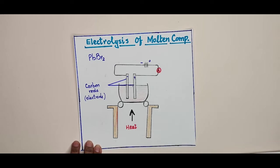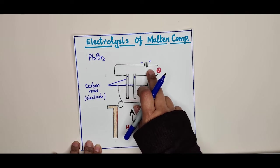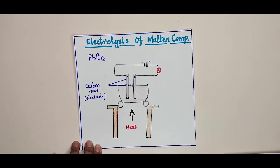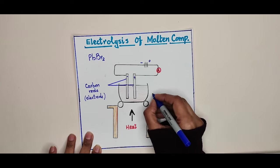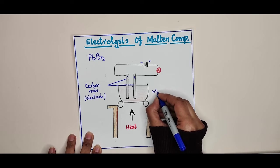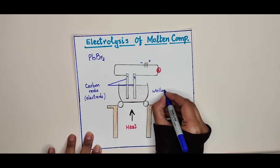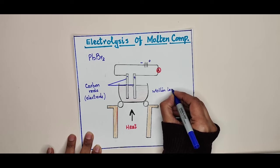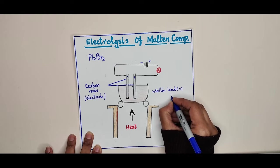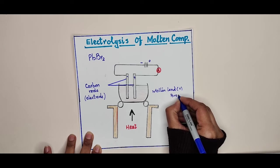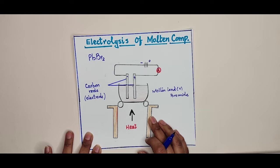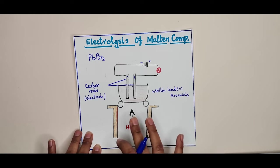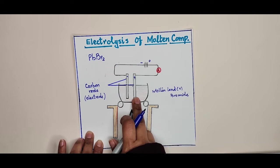Set up the apparatus, heat the lead bromide and melt it, then connect the battery and pass a current through the molten lead bromide. So we will have molten lead bromide as our electrolyte through which electric current will pass from the battery.